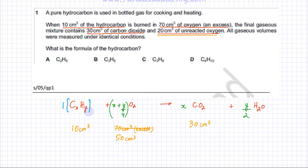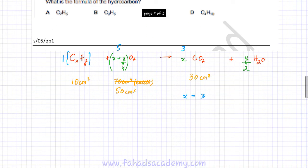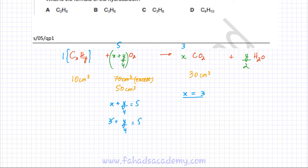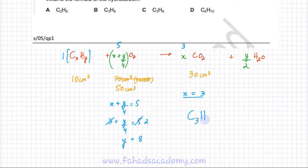The mole ratio gives us 1 hydrocarbon : 5 O₂ : 3 CO₂. This means X = 3, since 3 moles of CO₂ are produced. And X + Y/4 = 5, since 5 moles of O₂ are consumed. Substituting X = 3: 3 + Y/4 = 5, so Y/4 = 2, and Y = 8. Therefore X = 3 and Y = 8.